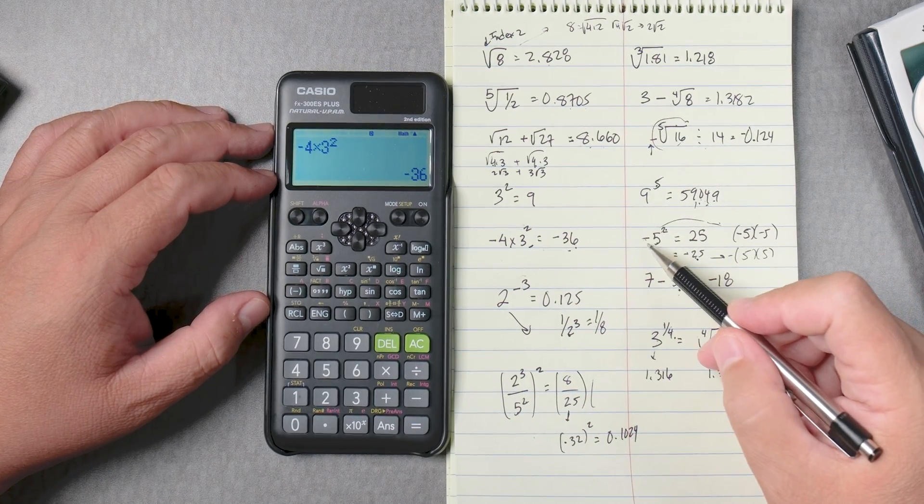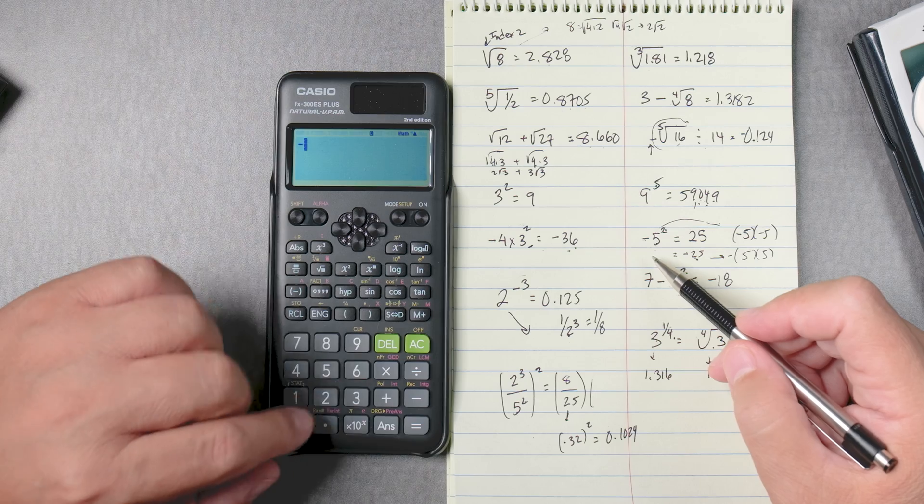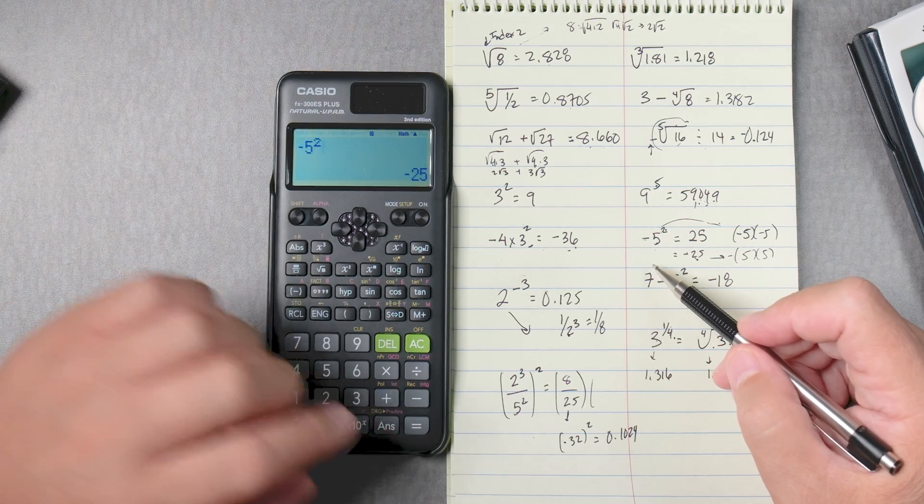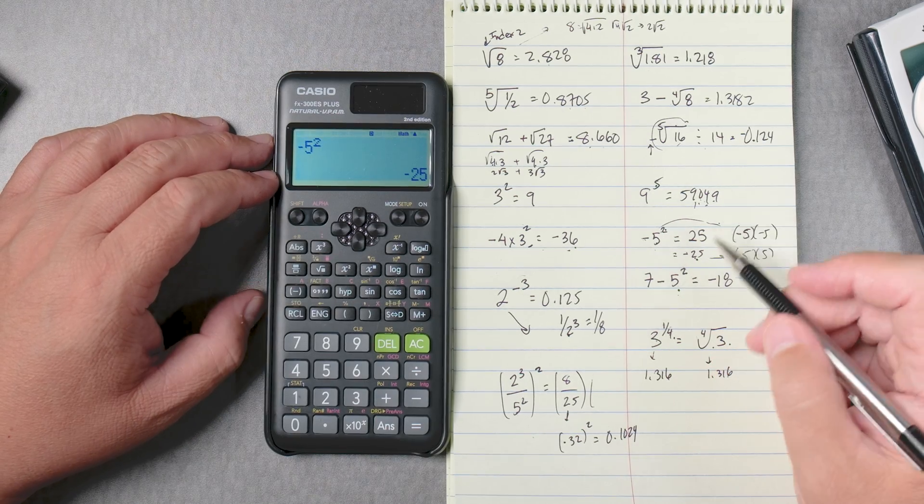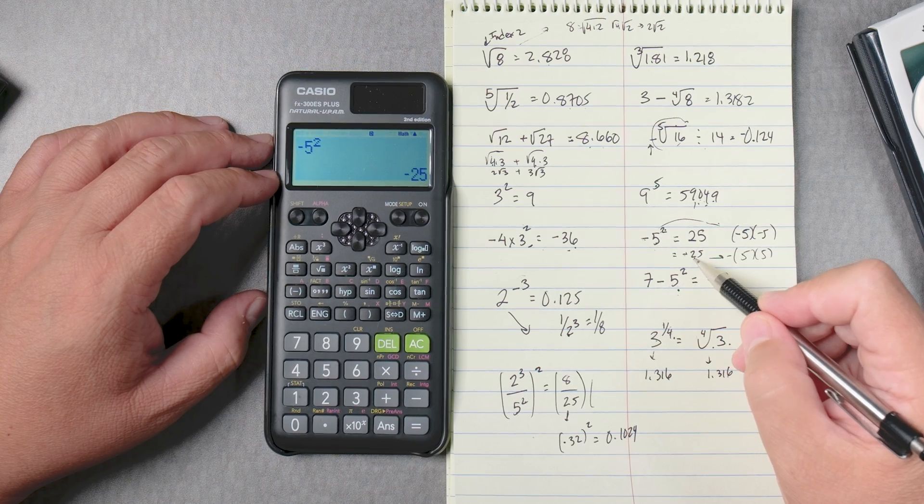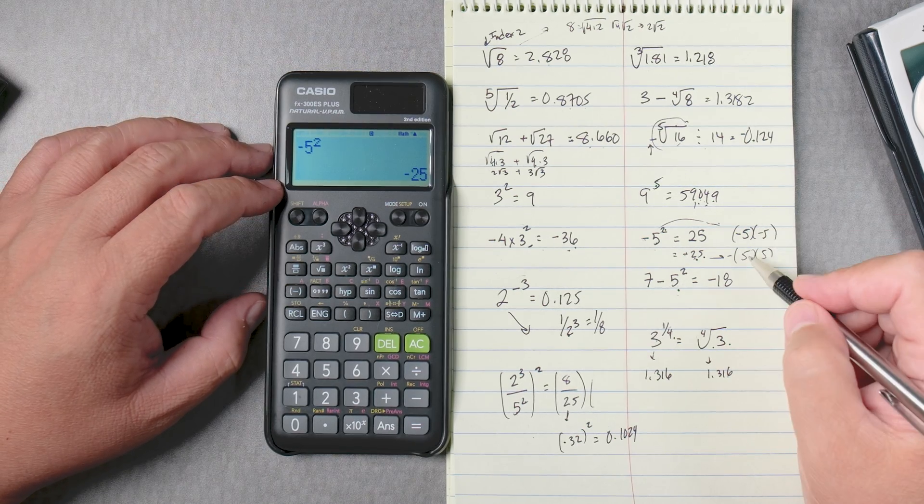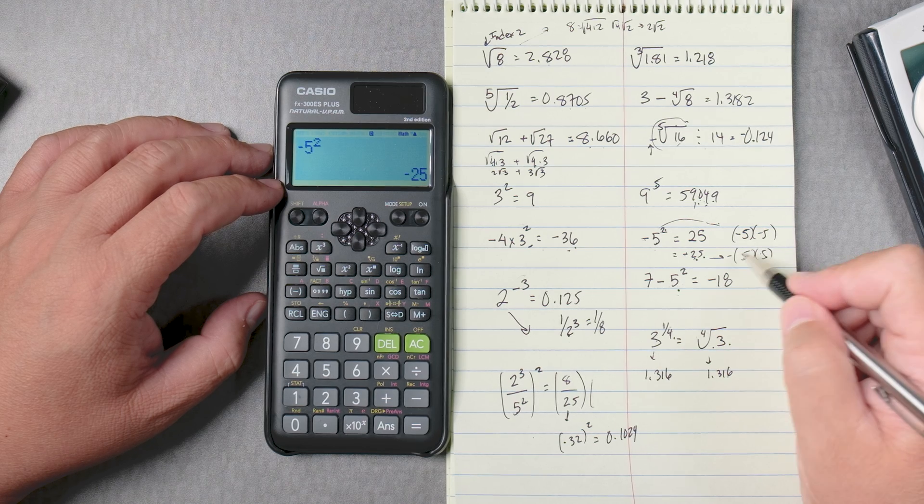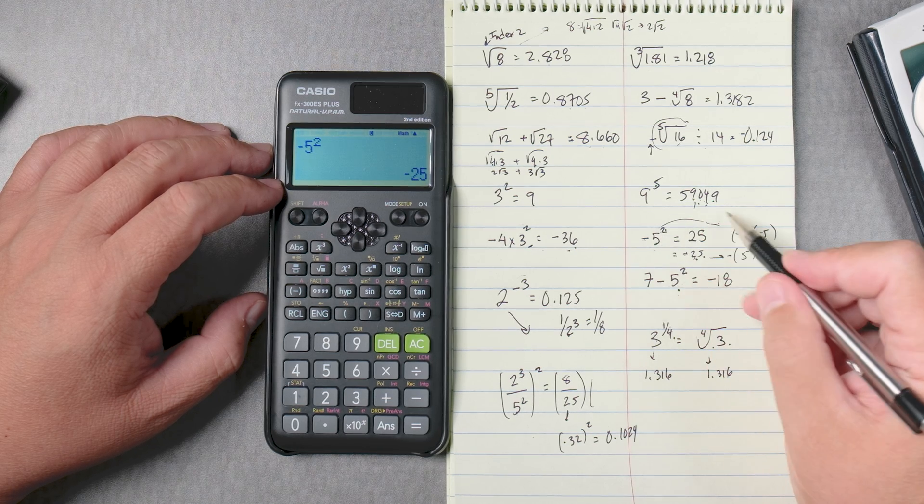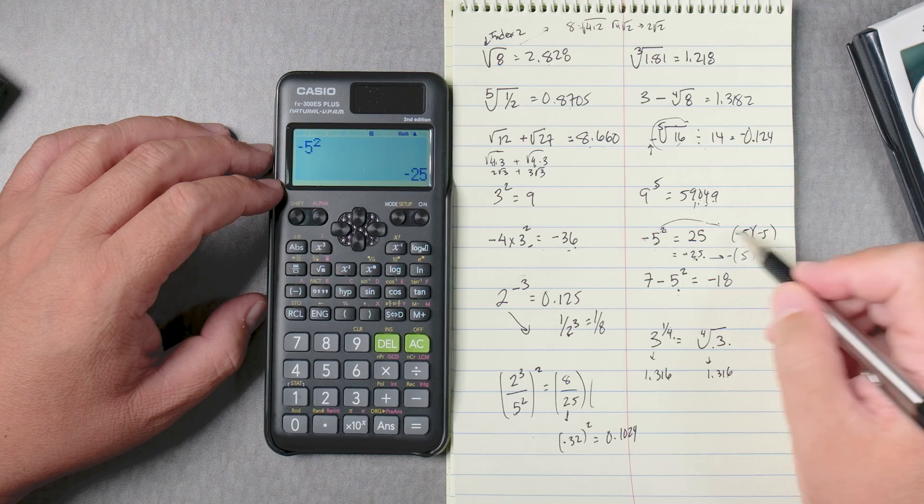So let's find out. Here, this one, we have negative 5 squared. We press enter, or equals, I mean. It's going to give you an answer of negative 25, which says that this calculator is saying 5 times 5, which is 25, and then the negative outside. It's not taking two negative 5s to give you 25.